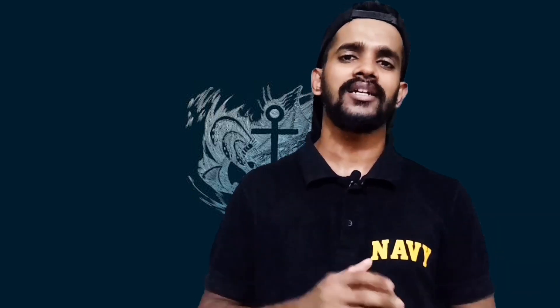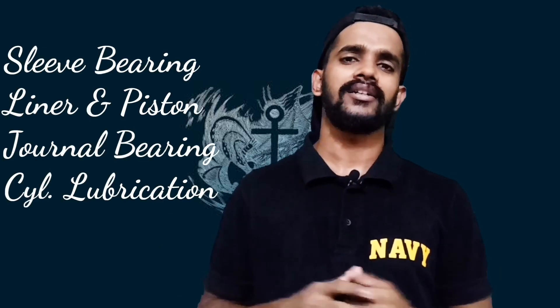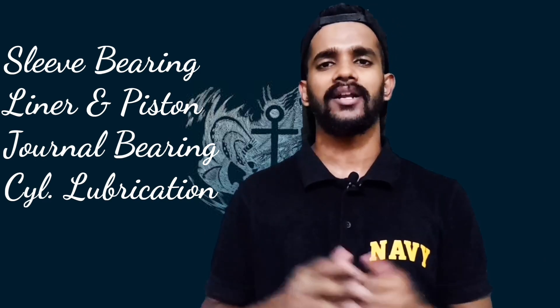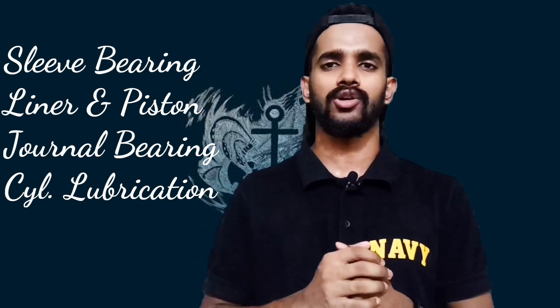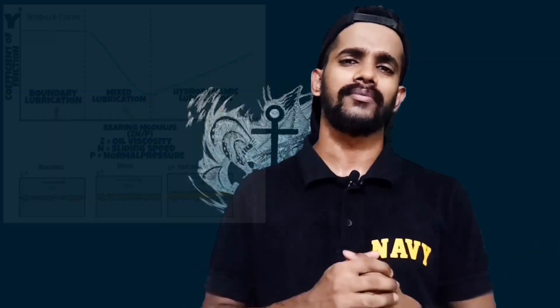The principle of any sliding bearing is given by the Stribeck Curve. It explains the principle of lubrication which comes under sliding contact bearing. The Stribeck Curve principles are used in sleeve bearing, liner and piston, journal bearing, and we even use this principle in our cylinder lubrication.